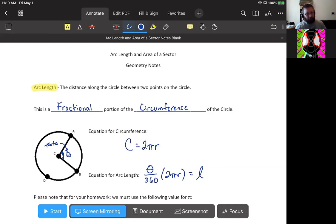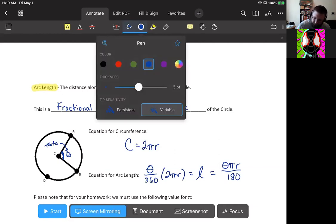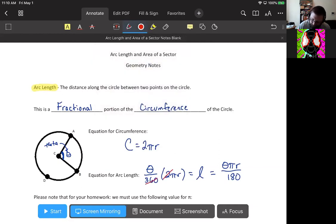Now it's worth noting that in theory, this could get simplified to theta times π times r over 180. Because the 2 and the 360, the 2 is on top, the 360 is on the bottom, so that would cancel. So in theory, this would be the simplest version of the arc length equation. Theta times π times r divided by 180.